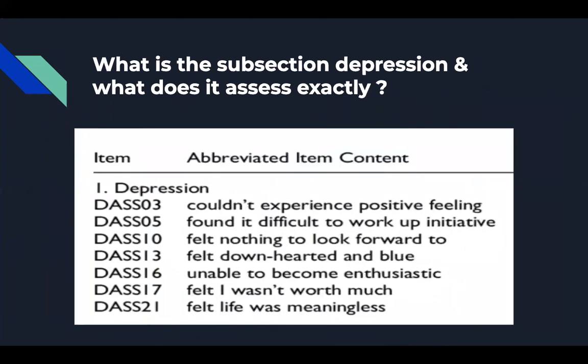So what is the depression subscale? This subscale is a self-report instrument. There are four response options ranging from zero, meaning did not apply to me at all, to three, meaning applied to me much or most of the time. The DASS depression subsection consists of seven items taken from the full version of the DASS. It is designed to measure if an individual has depression and how severe that depression is.